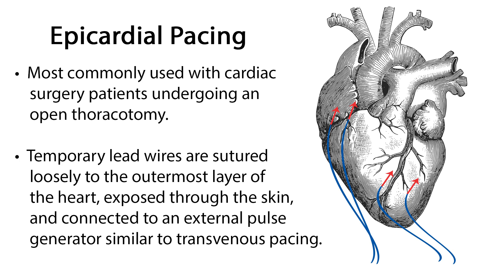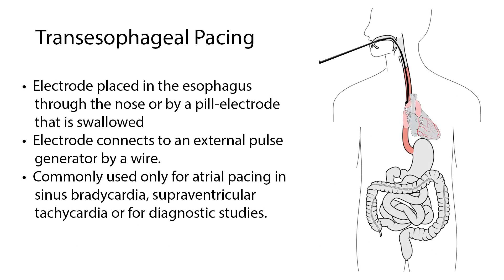Epicardial pacing is most commonly used with cardiac surgery patients undergoing an open thoracotomy. Temporary lead wires are sutured loosely to the outermost layer of the heart, exposed through the skin, and connected to an external pulse generator similar to transvenous pacing. Transesophageal pacing involves placing an electrode in the esophagus through the nose, or by a pill electrode that is swallowed. The electrode connects to an external pulse generator by a wire. This type of pacing is commonly used only for atrial pacing in sinus bradycardia, supraventricular tachycardia, or for diagnostic studies.